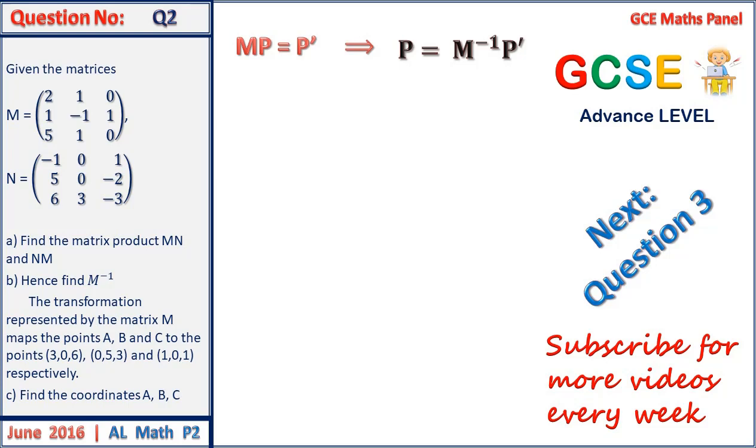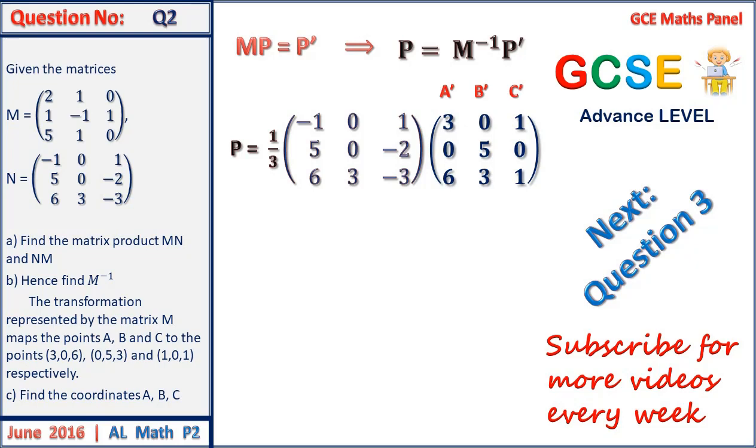Note that the point P or the matrix P consists of the points A, B, and C. So simplifying will give us one third, that is M inverse times N which we had before, now times the matrix P prime. That is the matrix of all the images of A, B, and C, and that gives us 3, 0, 1, 0, 5, 3, 6, 3, 1, where (3,0,6) is A prime, (0,5,3) is B prime, and (1,0,1) is C prime.